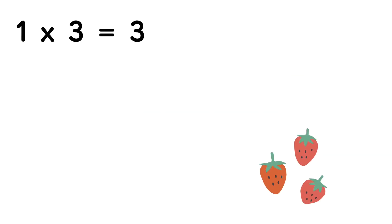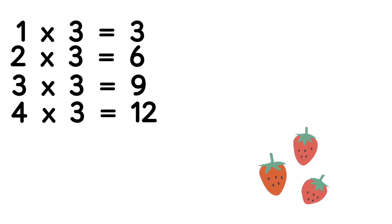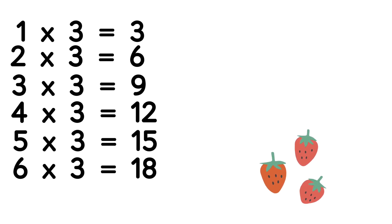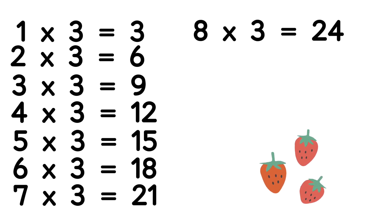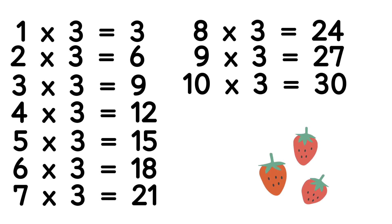Table of 3: 1 three is 3, 2 threes are 6, 3 threes are 9, 4 threes are 12, 5 threes are 15, 6 threes are 18, 7 threes are 21, 8 threes are 24, 9 threes are 27, and 10 threes are 30.